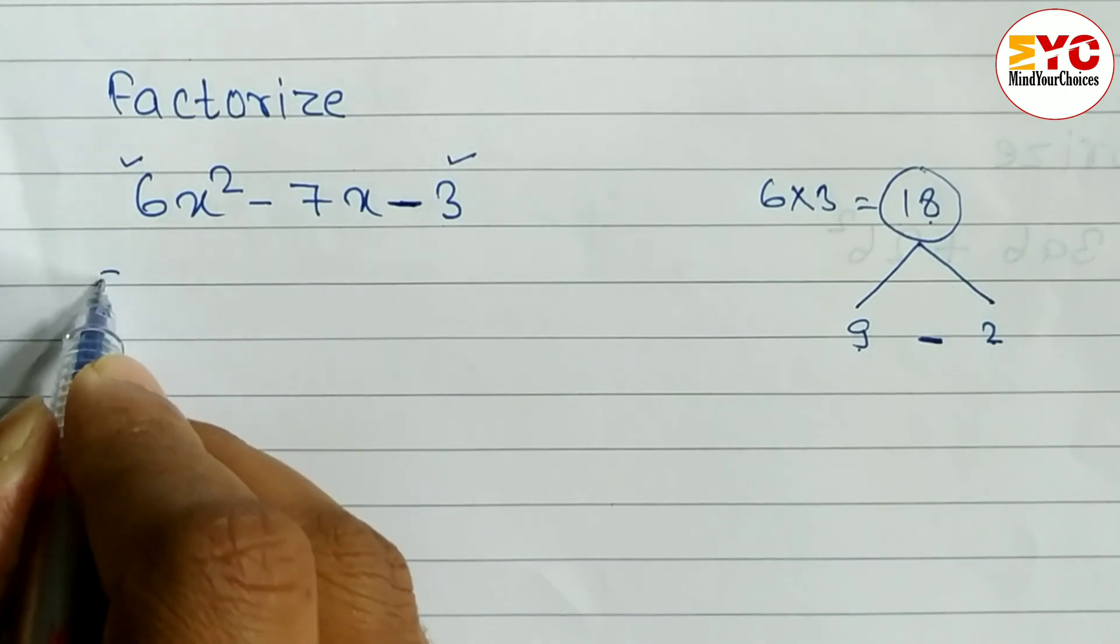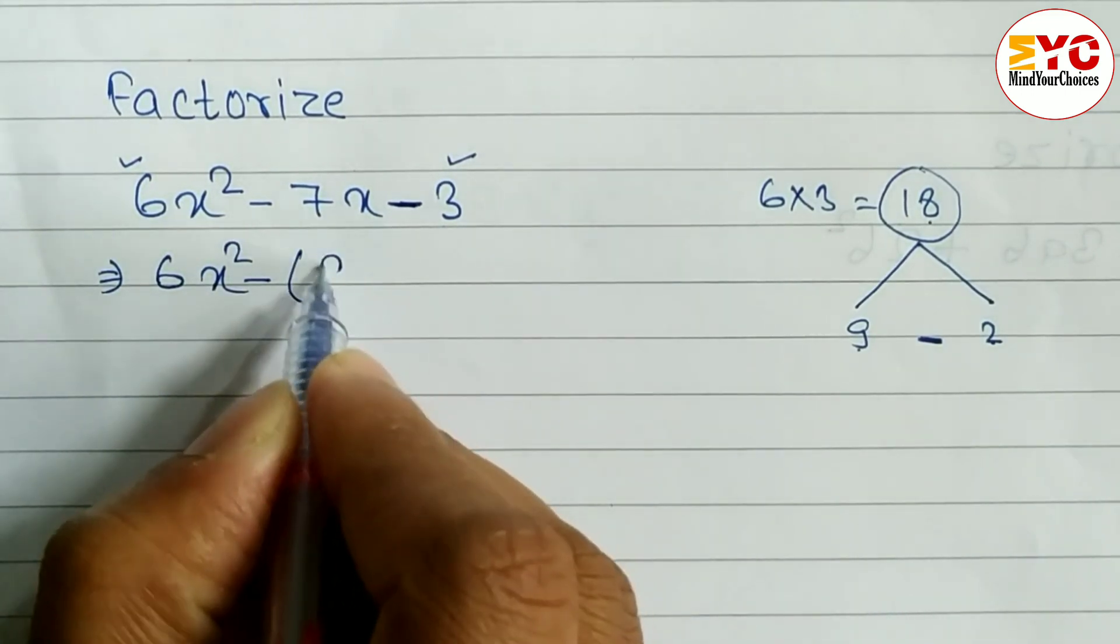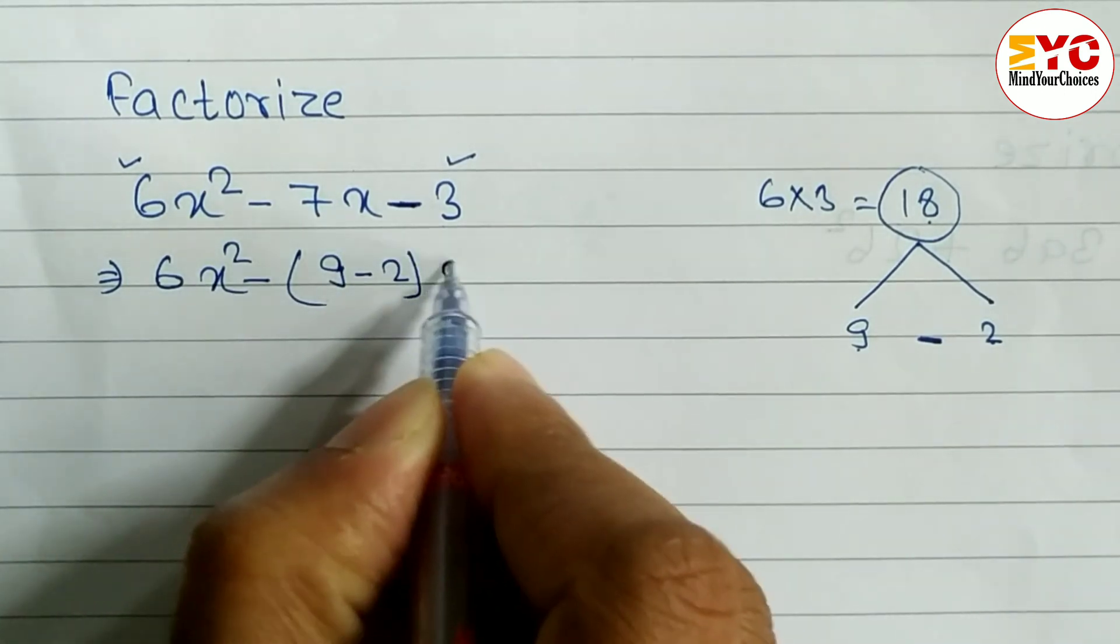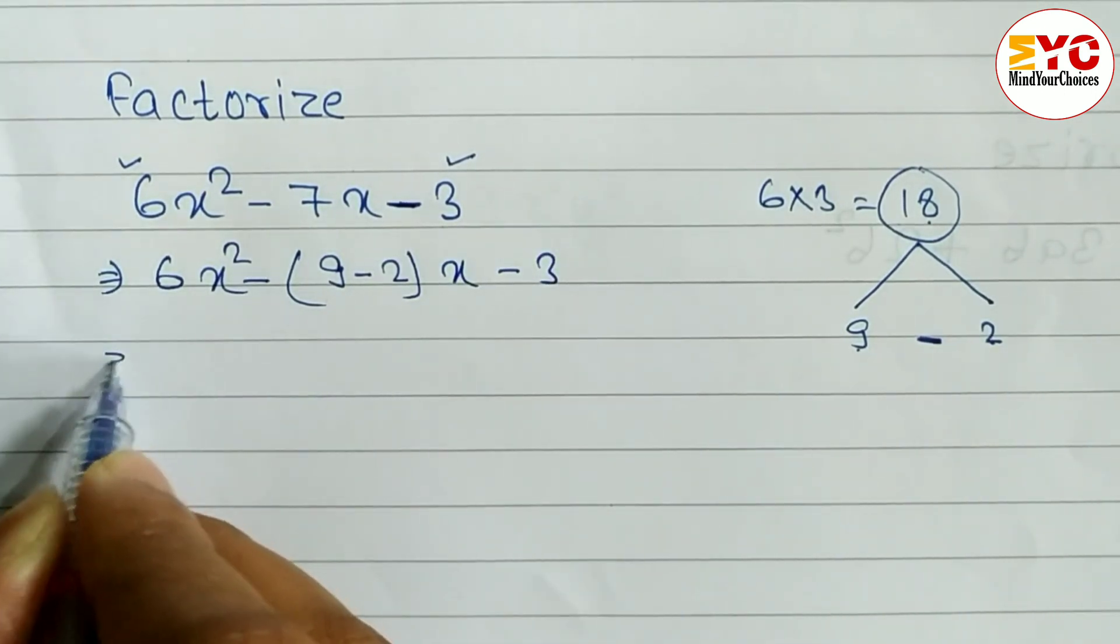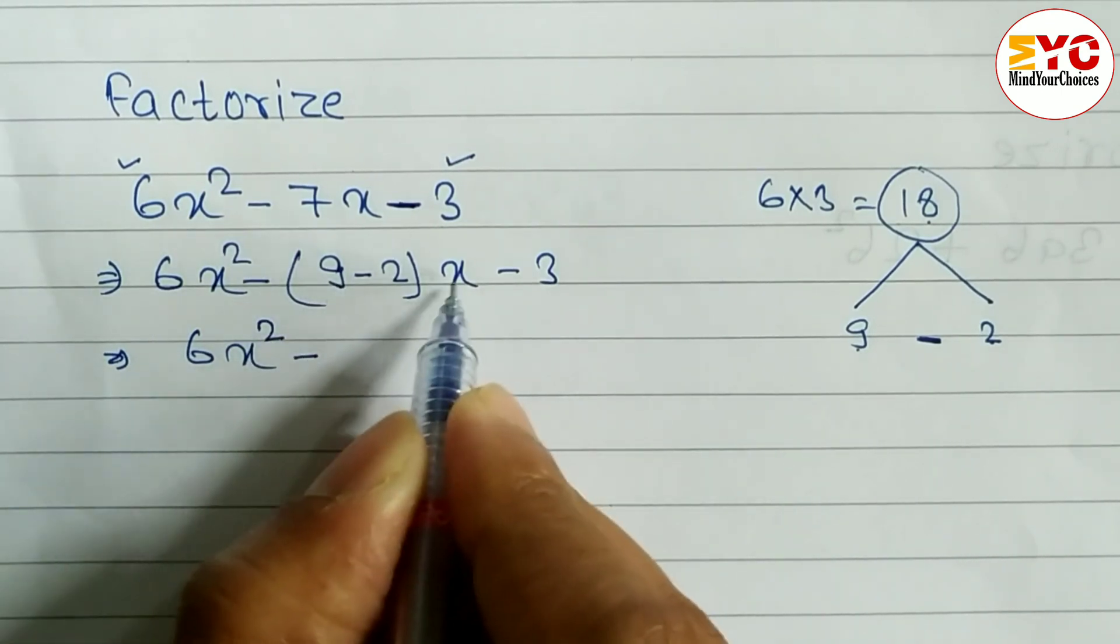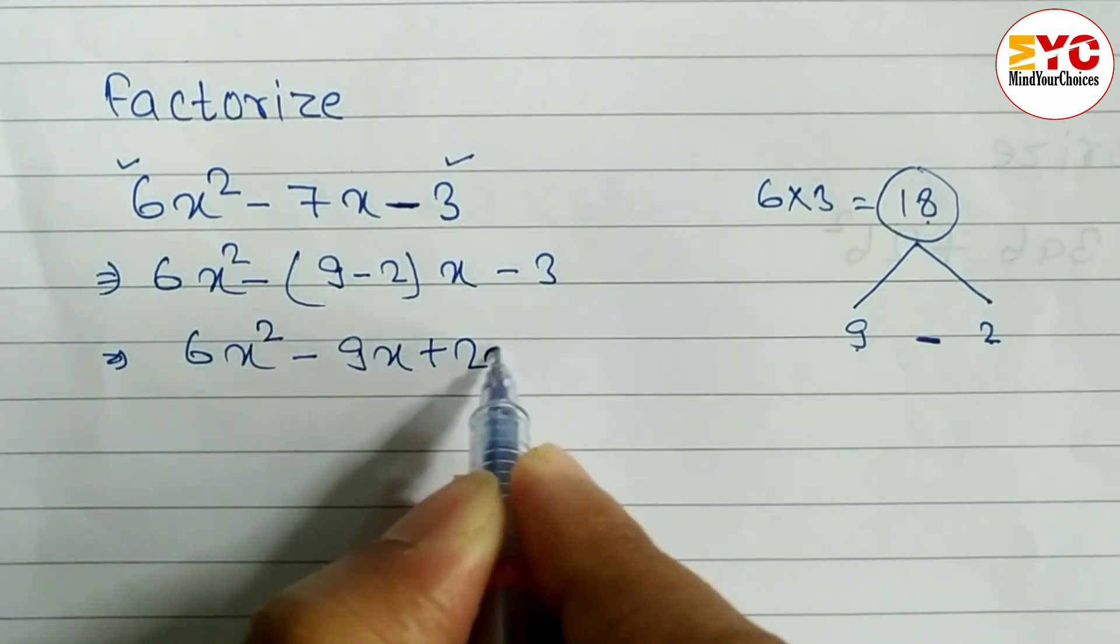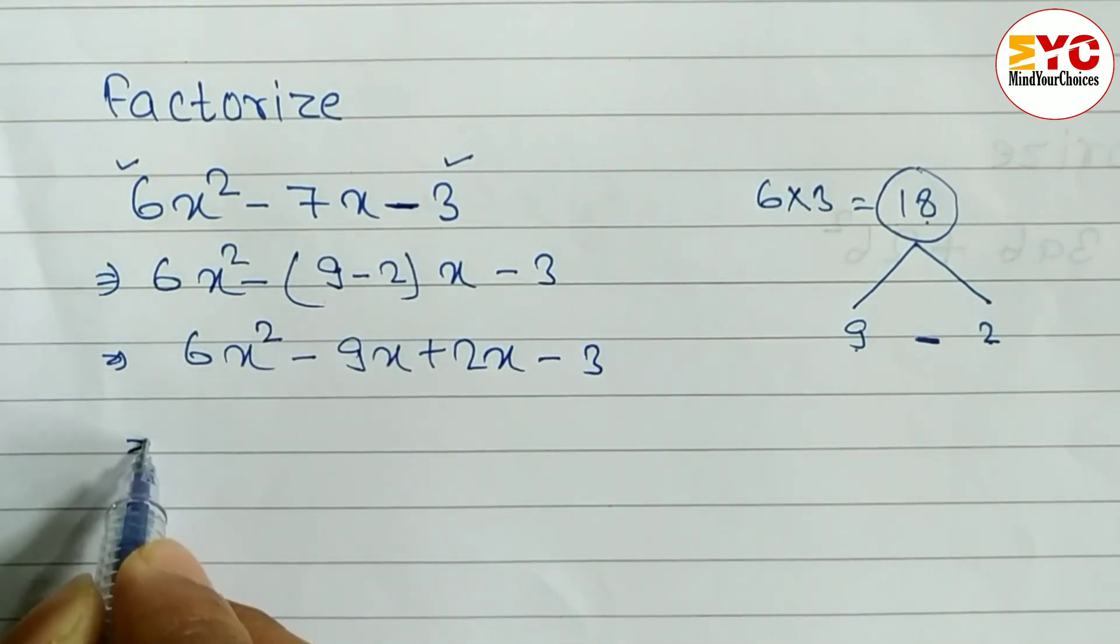So the factors are 9 and 2. We can write here 6x² minus, in the place of 7 we have to write 9 minus 2x minus 3. After this we have to open the bracket, so we can write: 6x² - 9x + 2x - 3. Now from first two terms we have to take common, from last two terms we have to take common.